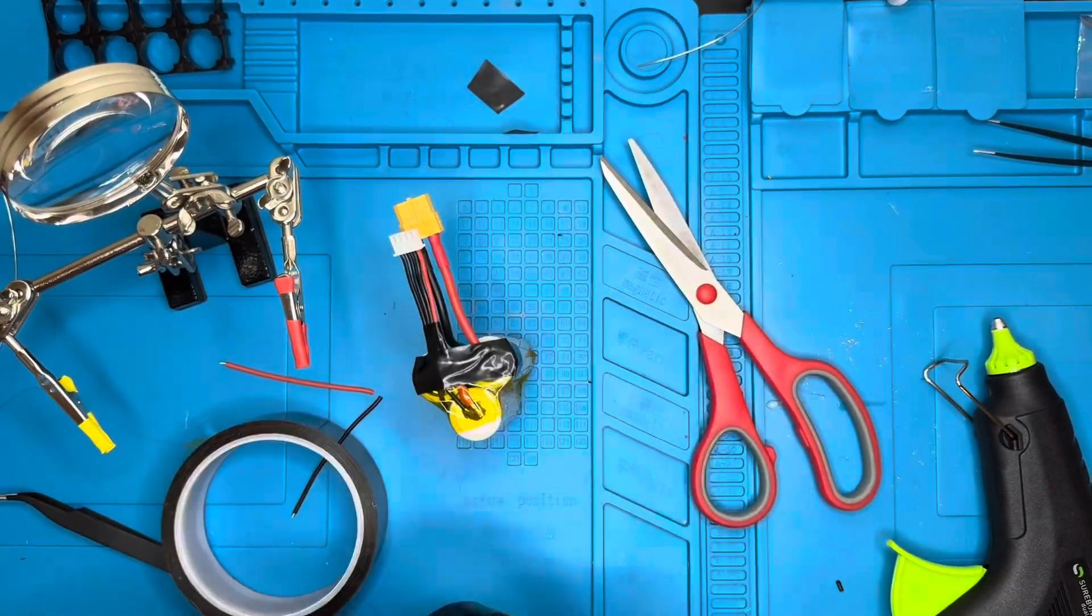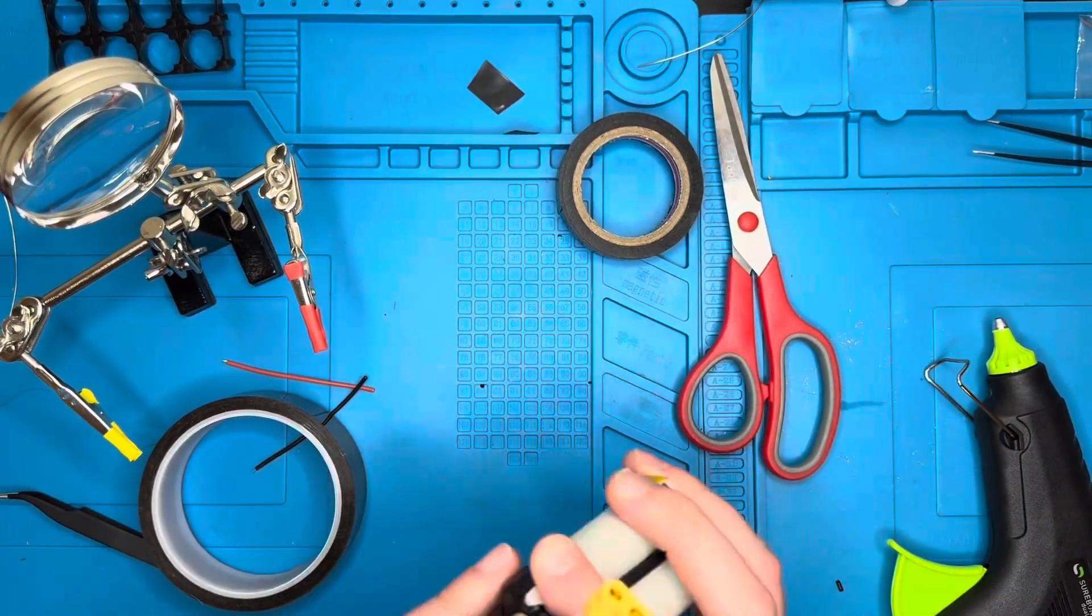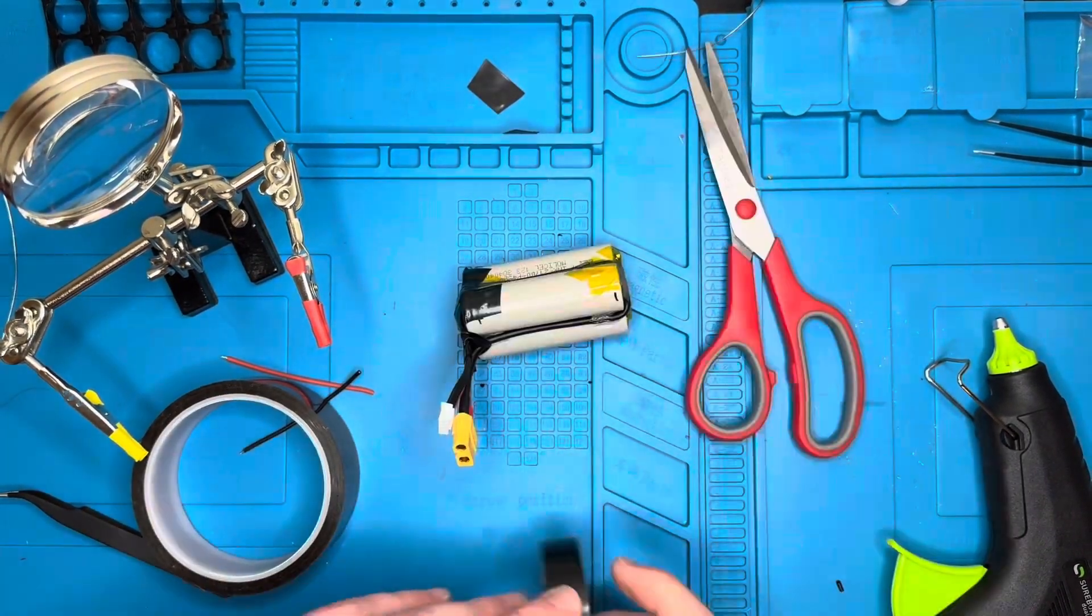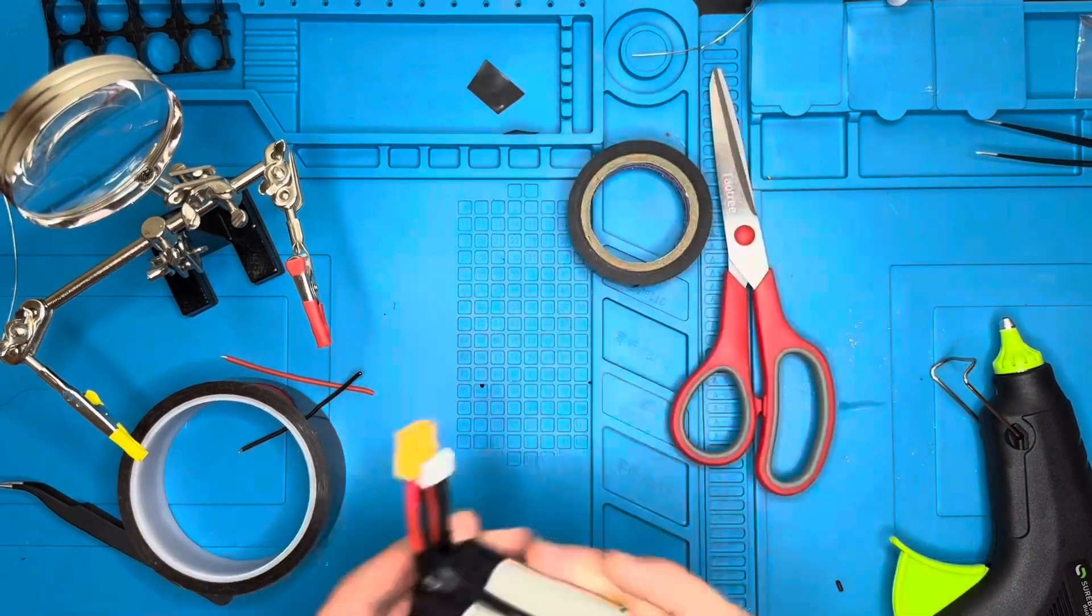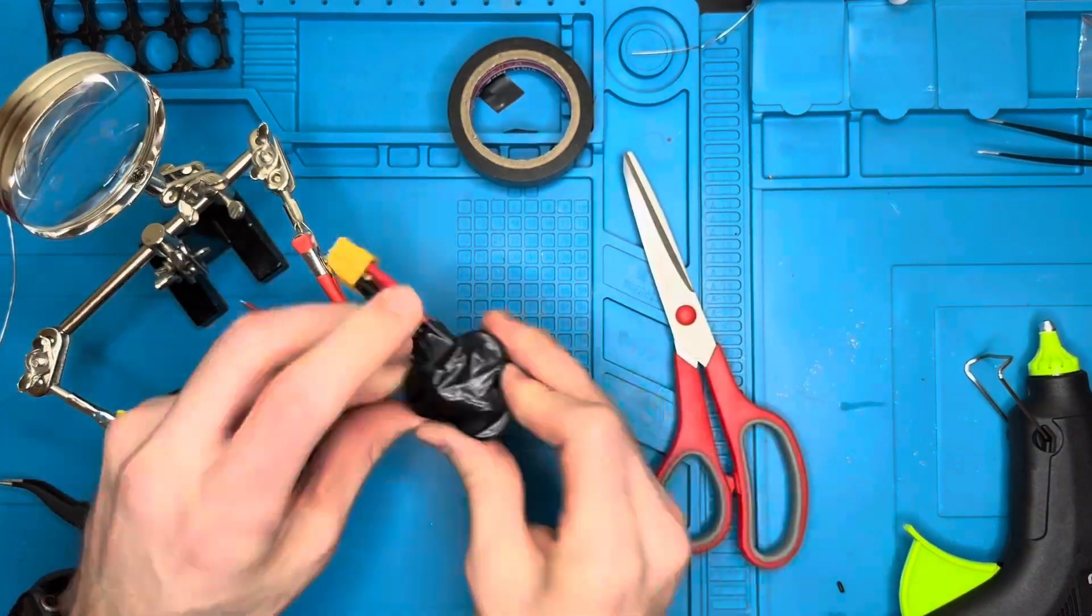One thing I didn't do on this battery, but you can do as an extra precaution, is put some kind of foam padding layer. That way if you crash, you're less likely to break any of the connections off. But yeah, the idea here is just to protect the ends, bundle it up, make it look nice.